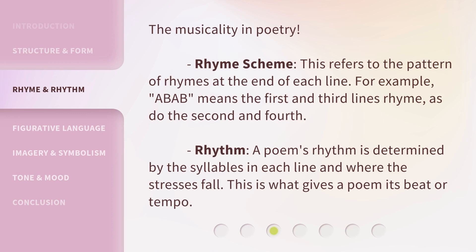The Musicality in Poetry. Rhyme Scheme: this refers to the pattern of rhymes at the end of each line. For example, ABAB means the first and third lines rhyme, as do the second and fourth. Rhythm: a poem's rhythm is determined by the syllables in each line and where the stresses fall. This is what gives a poem its beat or tempo.